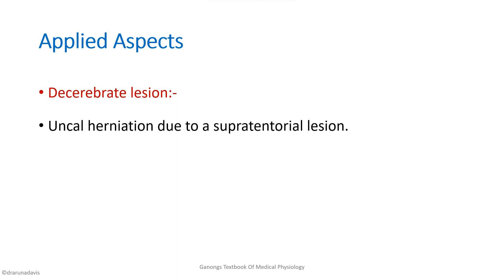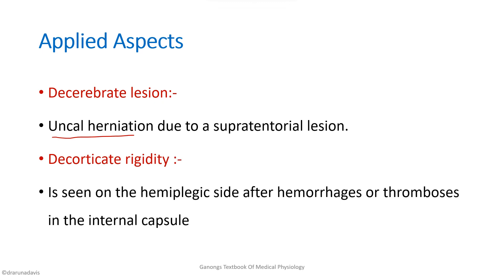For applied aspects: a lesion producing decerebrate-type rigidity is uncal herniation due to a supra-tentorial lesion. Decorticate rigidity is usually seen on the hemiplegic side after hemorrhage or thrombosis in the internal capsule. When there is a lesion in the internal capsule such as a hemorrhage or thrombosis, a decorticate type of rigidity is seen on the affected hemiplegic side.